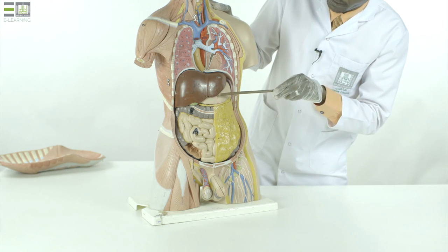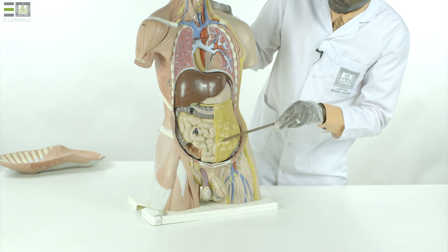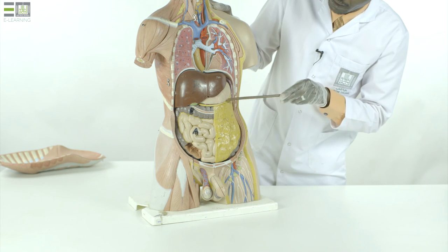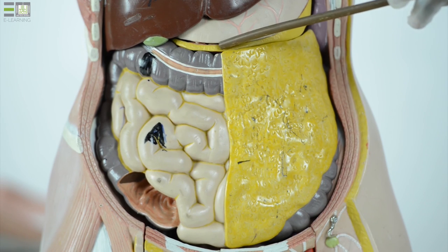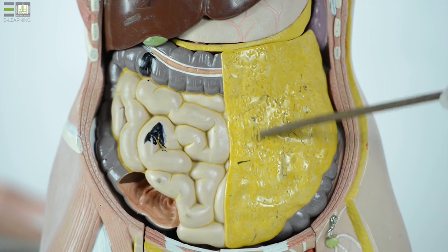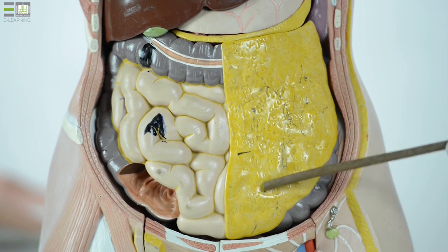And it has extensions between the different organs forming what is called ligaments or mesenteries, like this for example, which attaches to the stomach and descends freely in the anterior abdominal wall, behind the anterior abdominal wall, called the greater omentum.